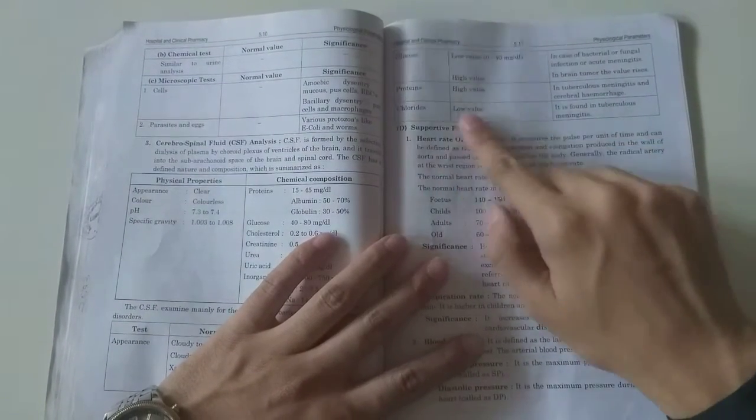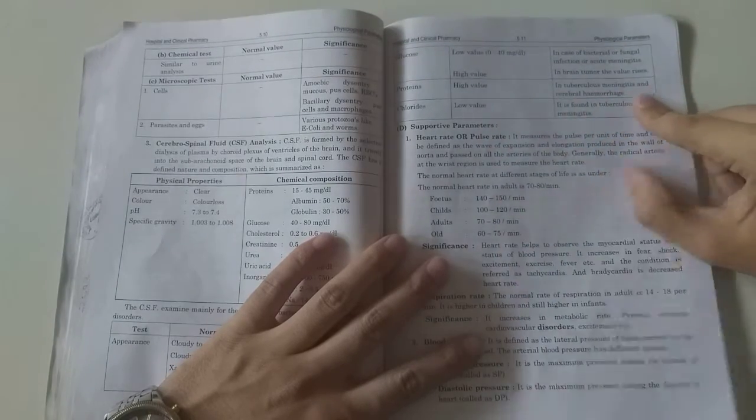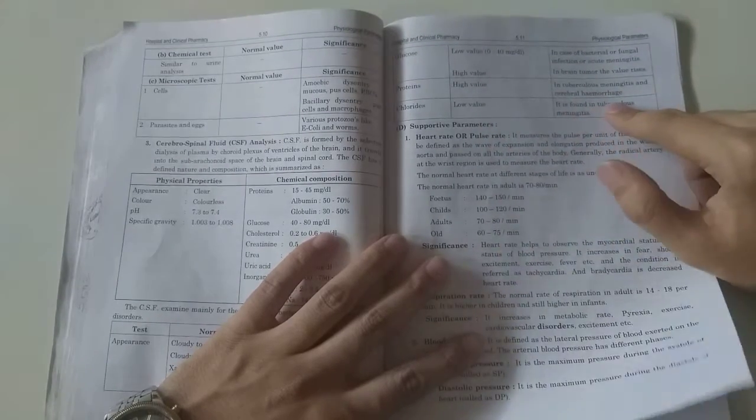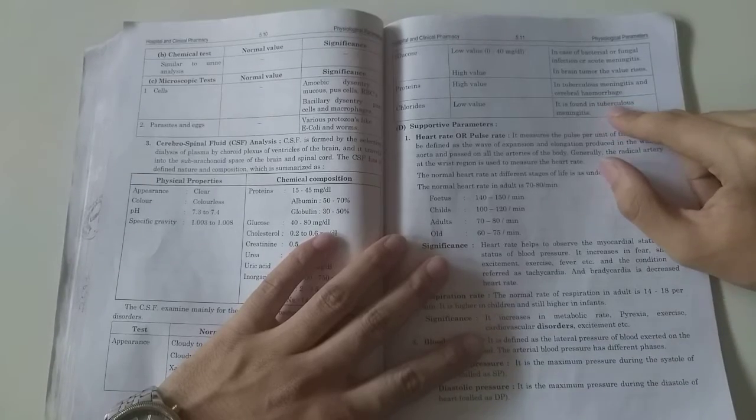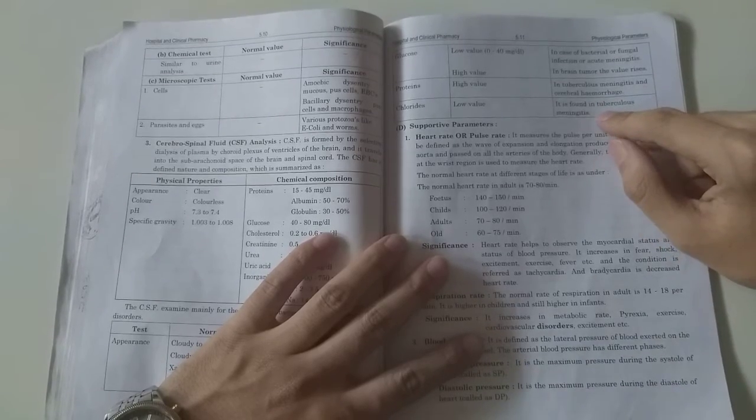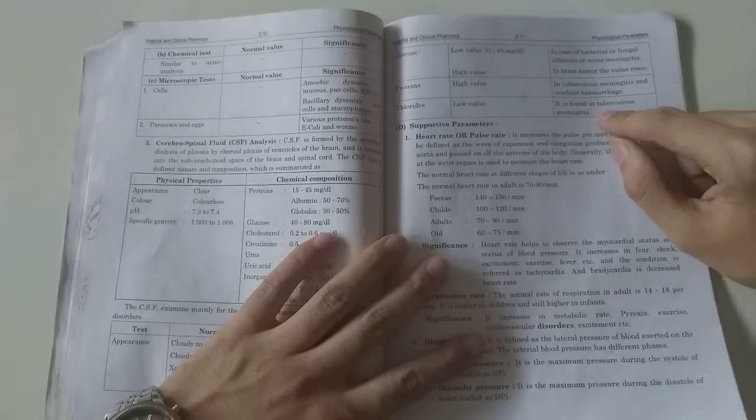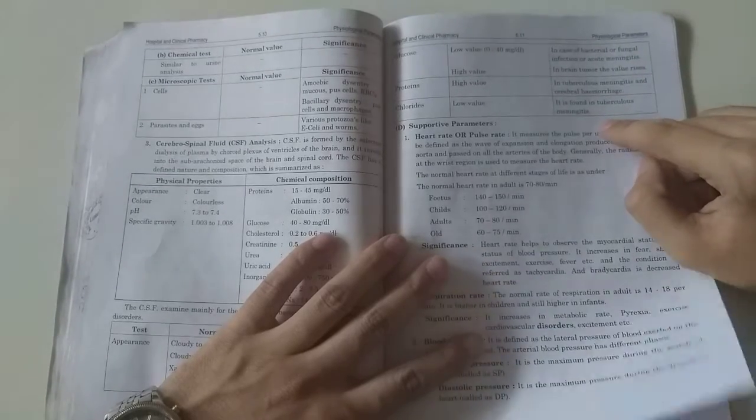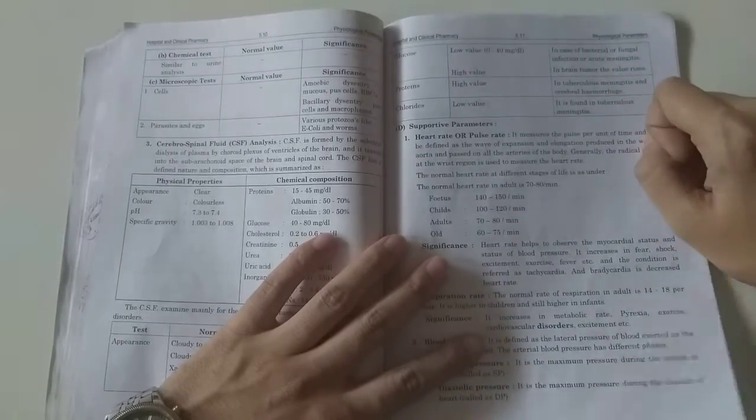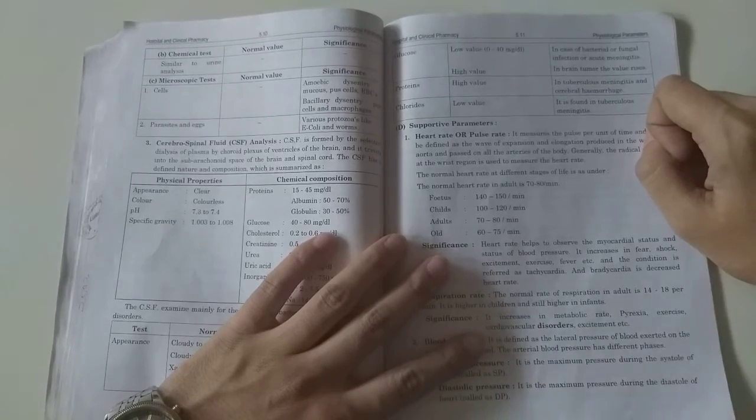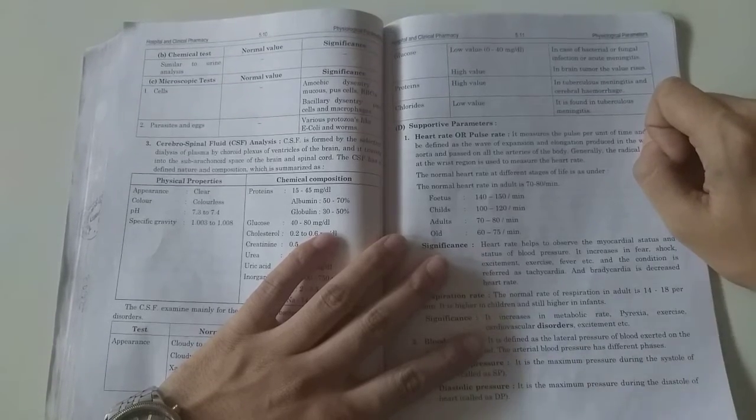If protein is in high value, it is seen in tuberculosis, meningitis, and cerebral hemorrhage. If there is brain injury or cerebral hemorrhage, then protein is in high value. Chloride is in low value, found in tuberculosis and meningitis.